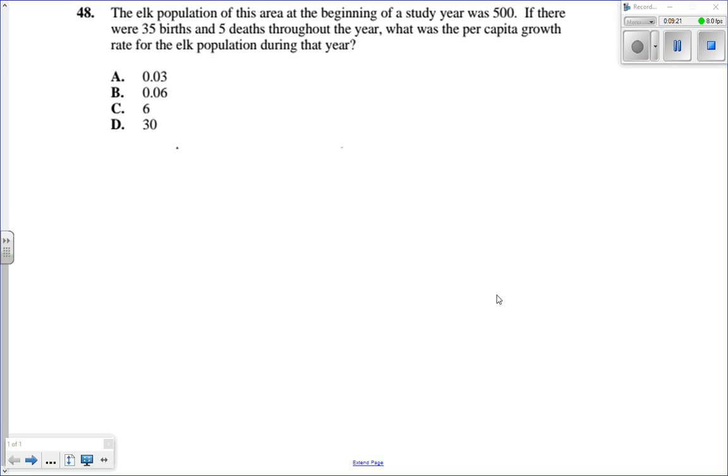We've got a question about elk. The elk population of this area at the beginning of the study year was 500. If there were 35 births and 5 deaths throughout the year, what was the per capita growth rate for the elk population during that year? So once again, let's start with a formula. CGR equals delta N over N.